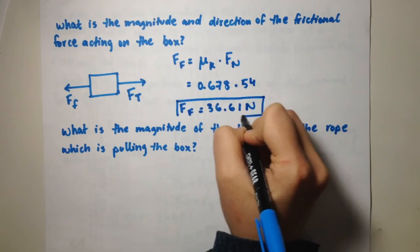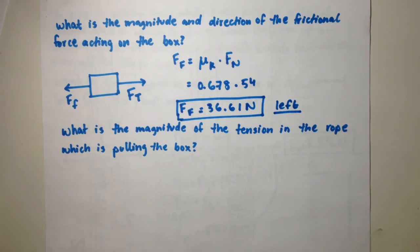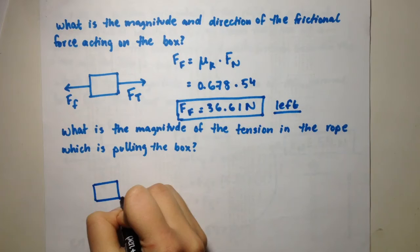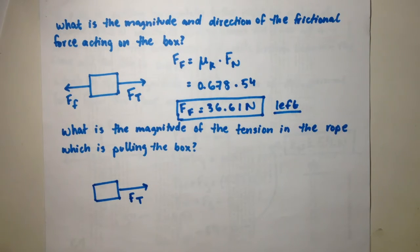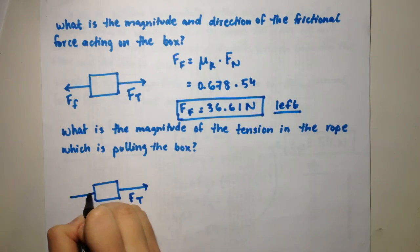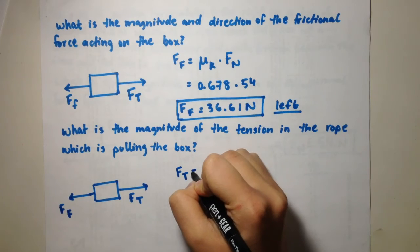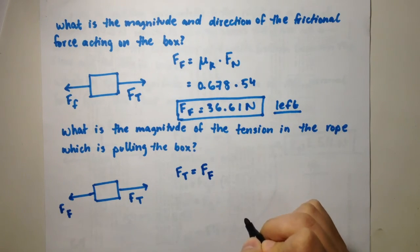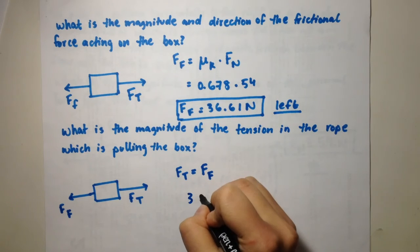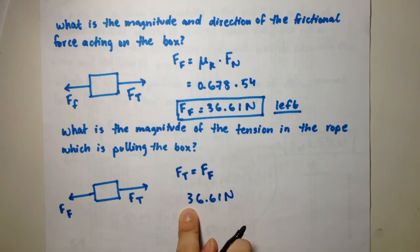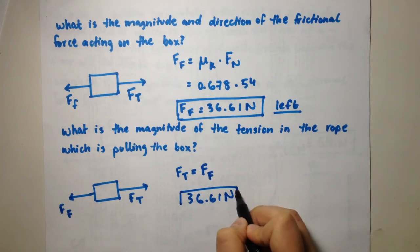The direction of friction is to the left. For the tension in the rope: the tension equals the frictional force because the whole system is in equilibrium — there is constant velocity and zero acceleration. So the force of tension equals the force due to friction. They are equal in magnitude but opposite in direction. The force due to friction is 36.61 newtons, so the tension in the rope is also 36.61 newtons, but directed towards the right.